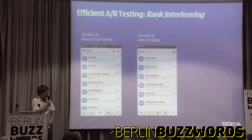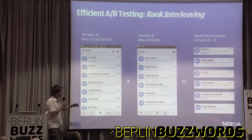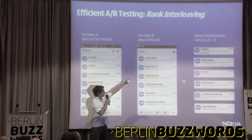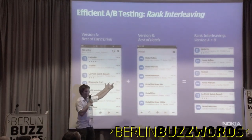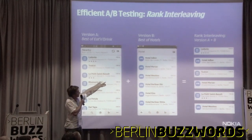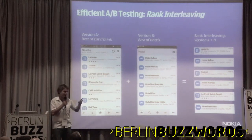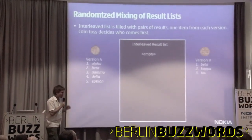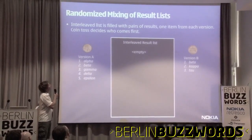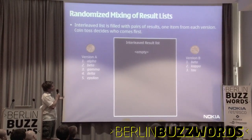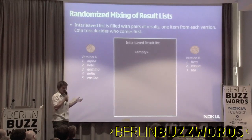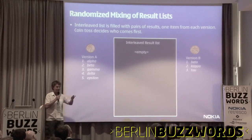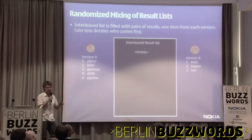So what you do in rank interleaving is this: you have your versions A and B, and the rough idea is that instead of feeding them to separate user populations, you synthesize a new list which combines them, creating individual A-B tests in one synthesized list. You see this here — it starts with a restaurant recommendation, followed by a hotel, followed by a restaurant, and so forth. You build these pairs and feed users a list of A-B tests, so to say. What you do is a randomized mixing of lists, and the interleaved list is filled with pairs of results, one item from each version. You do a coin toss — hopefully with a fair coin — to make sure each version has the same chance of being first, because you have position bias: people tend to click on what's on top.